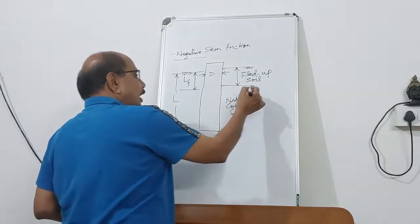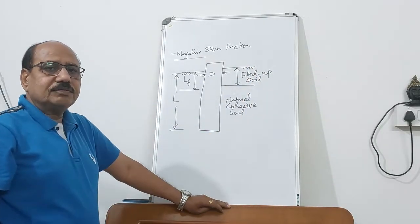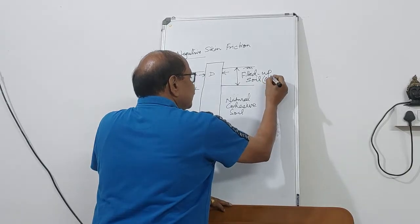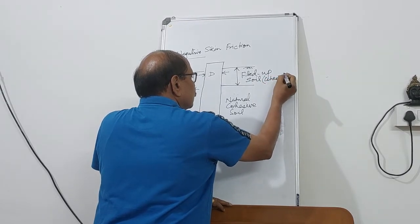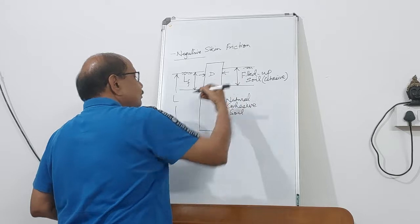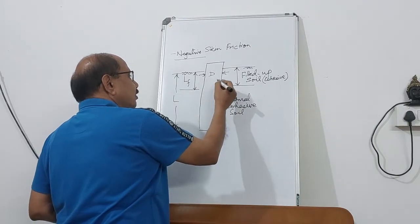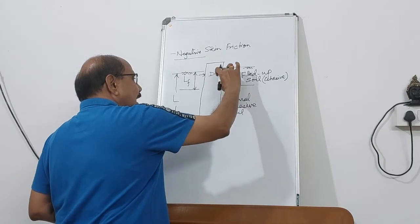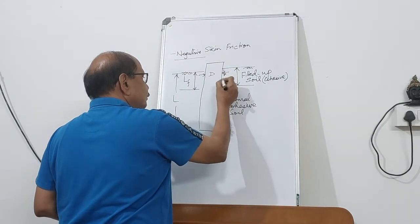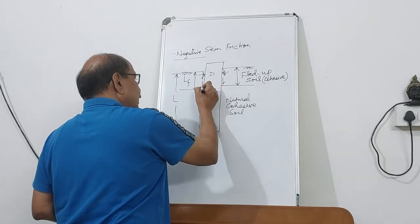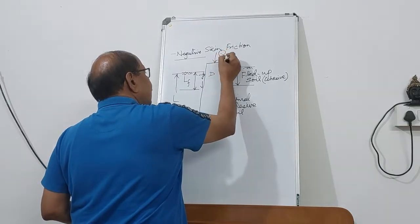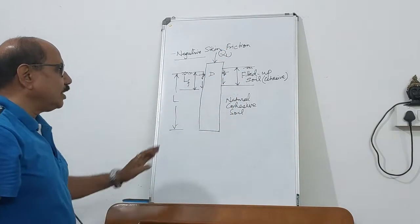Now this filled-up soil is going to decompose over a period of time and it is of cohesive nature, so it is going to settle. If it is going to settle, there will be a drag force that will act over the pile shaft and that drag force will be in the downward direction. So how do we compute the ultimate load carrying capacity of this pile?